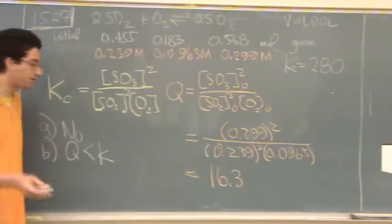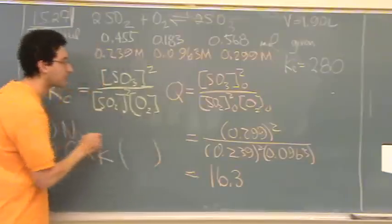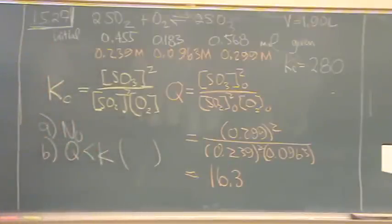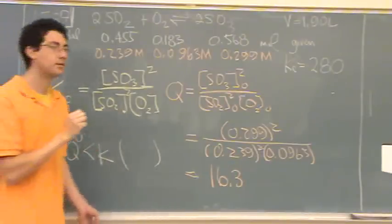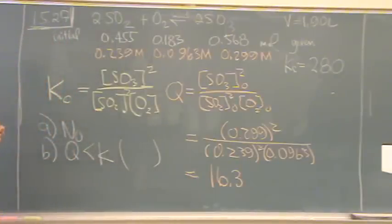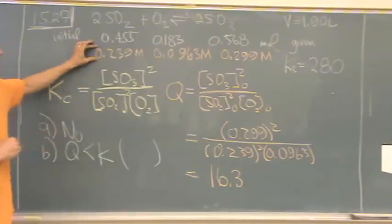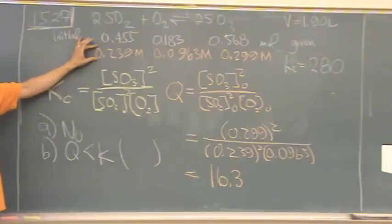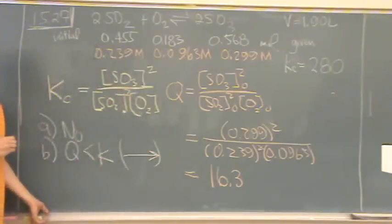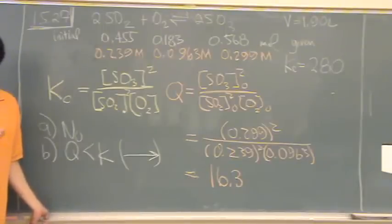So, we need to shift which direction, left or right? Does that kind of make sense? Is this like relative to K or Q? K never changes, so only Q can change. So, in this case, we need to make more products. So, we'll shift to the right. We'll lose reactants if we shift to the right and gain more products.